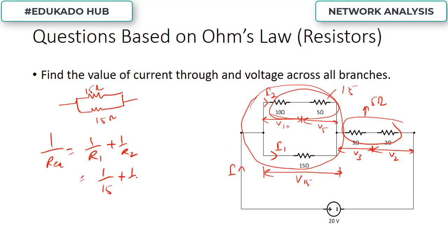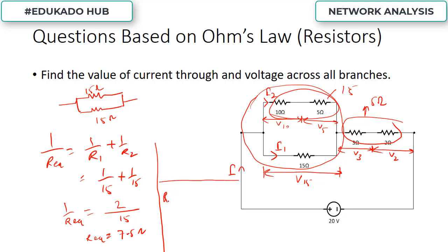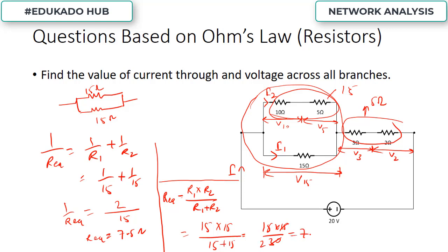So, 1 upon 15 plus 1 upon 15 equals 2 by 15, giving 1 upon R_eq. Therefore R_eq equals 7.5 ohms. You can also solve it directly using R_eq equals R1 times R2 upon R1 plus R2, which gives 15 times 15 upon 30, equal to 7.5 ohms. So the equivalent resistance of this particular circuit is 7.5 ohms.